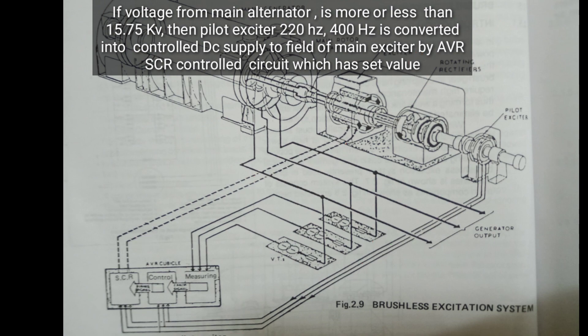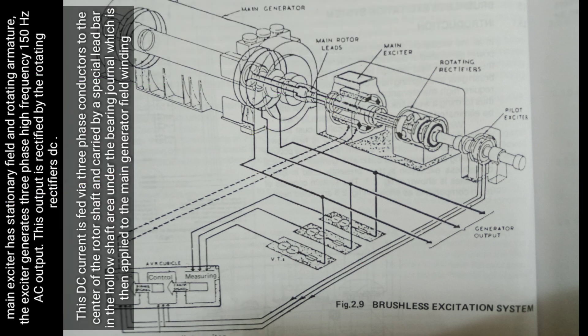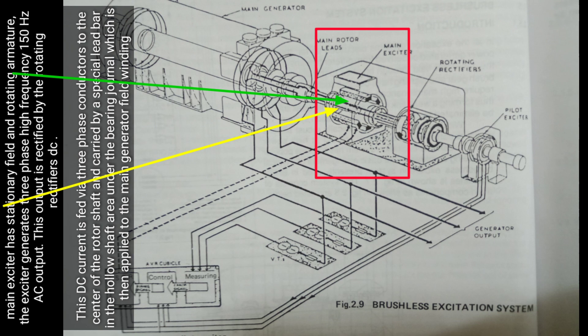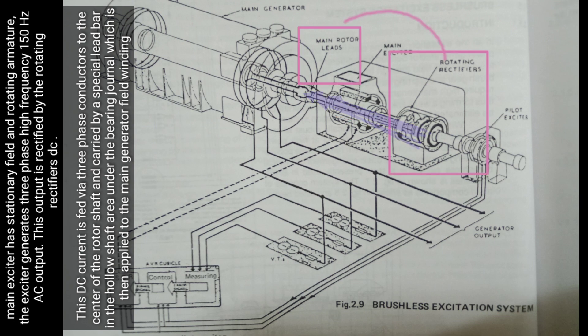The main exciter has stationary field and rotating armature. The exciter generates three-phase high frequency 150 Hertz AC output. This output is rectified by the rotating rectifiers.